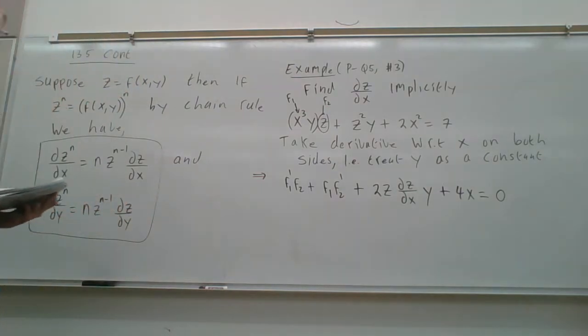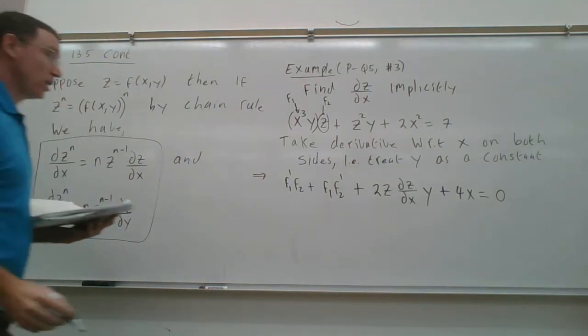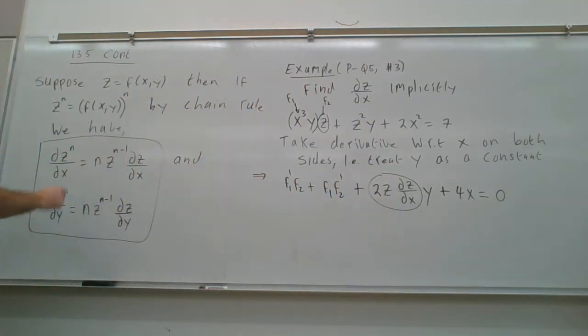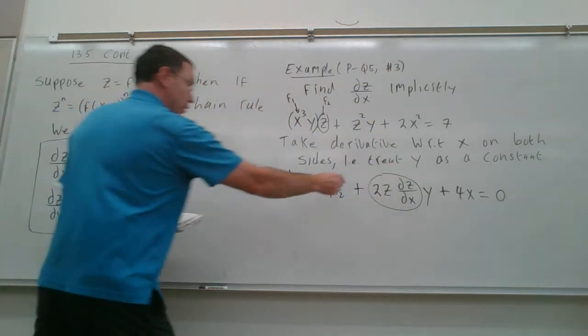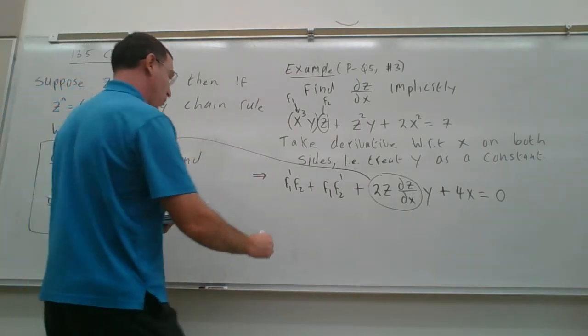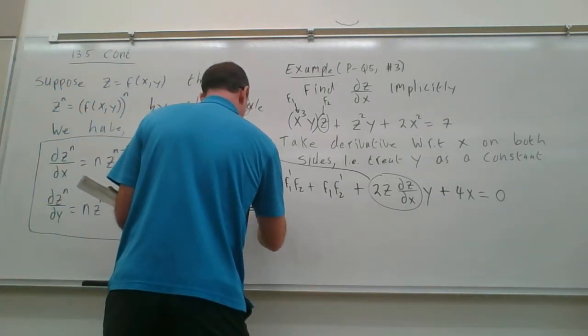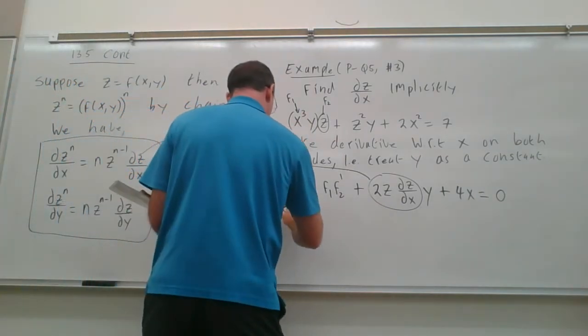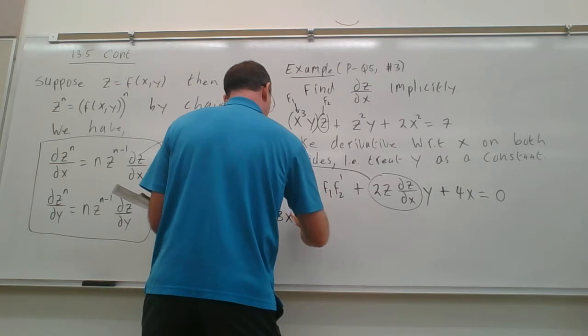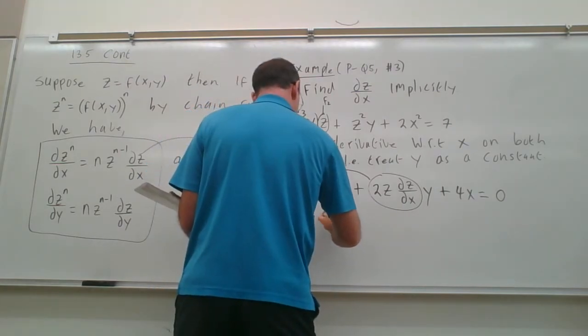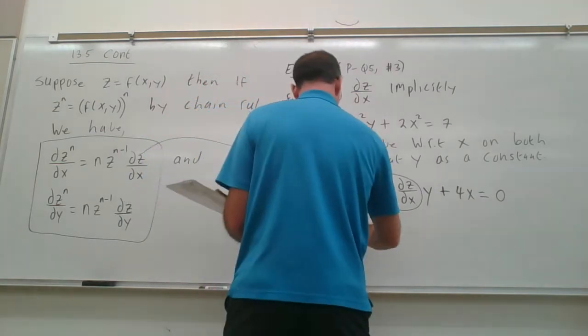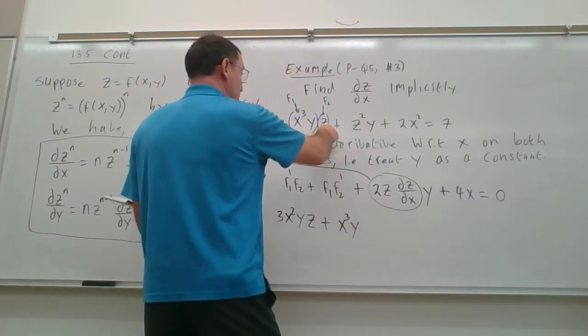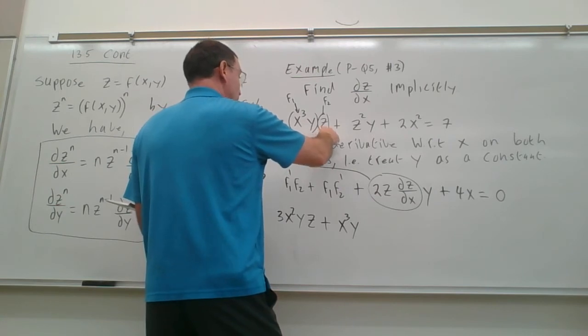So look at this. Again, this guy here was from the chain rule over here. Okay, so go over here and let's work this out then. So f1 prime, the prime means with respect to x, so it would be 3x²y times z plus f1, so it would be x³y. F2 prime would just be partial z with respect to x.